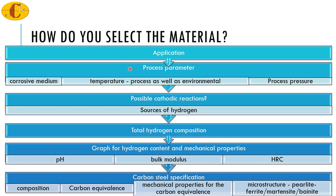The specific application entails that you take note of what is going to be the corrosive medium, what is going to be the temperature — by temperature I mean the process temperature as well as the environmental temperature. Because while the internal temperature will affect the internal stresses on the equipment, the environmental temperature may cause accelerated external corrosion as well. The next parameter to be noted would be the process pressure, which will actually bring down your application to the most specific pressure that the equipment would need to sustain. Once we have narrowed down the process parameters, then we come to the possible cathodic reactions, which will actually result from the process parameters and lead to the formation of hydrogen.